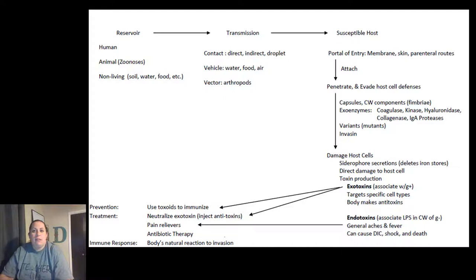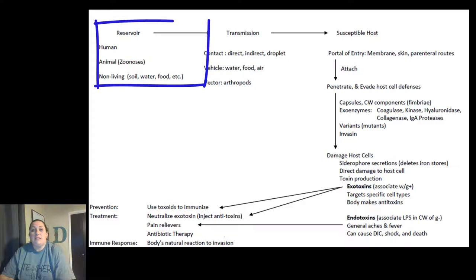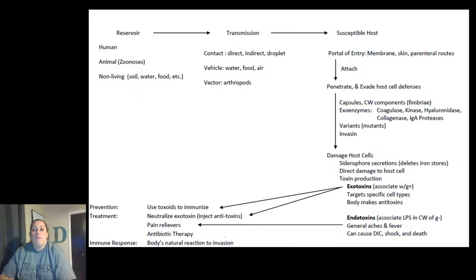Let's talk about how infection takes place. The infectious agent — the pathogen — has to be located in some sort of reservoir. It's either infected another human or animal, or it's in the soil, water, or food. In order for it to make you sick, it has to leave the reservoir and be transmitted to you.